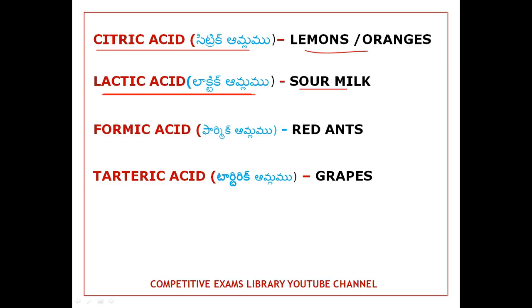Next is Formic Acid. Formic Acid is found in red ants. Next is Tartaric Acid. Tartaric Acid is found in grapes. This is an important one.